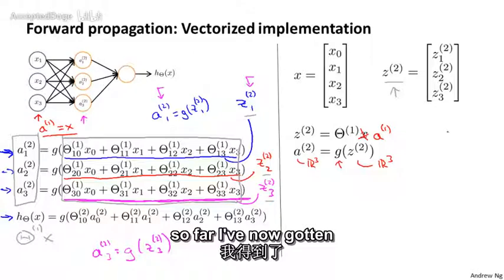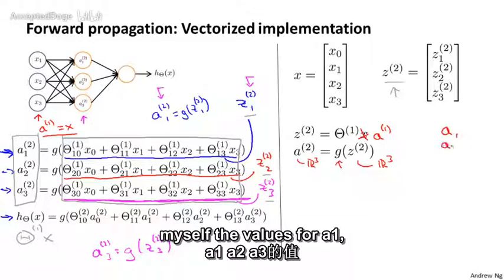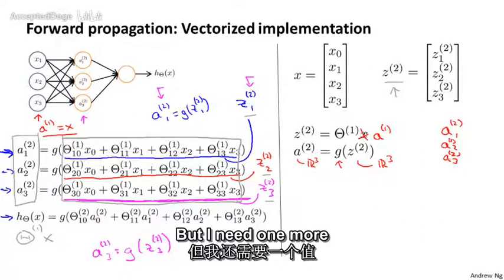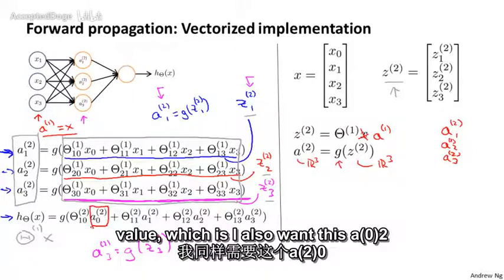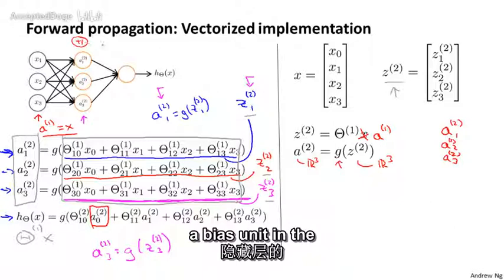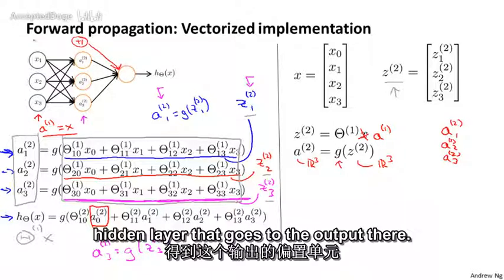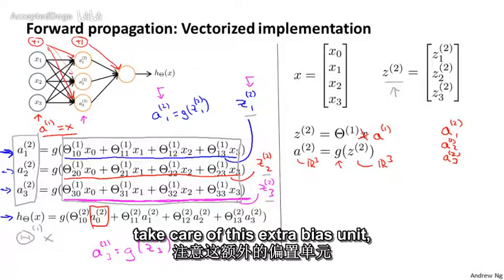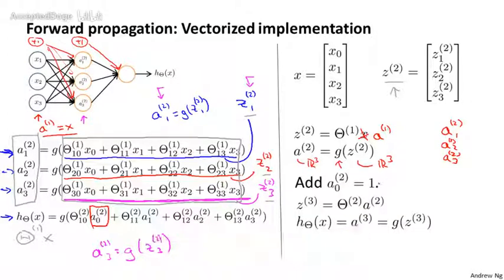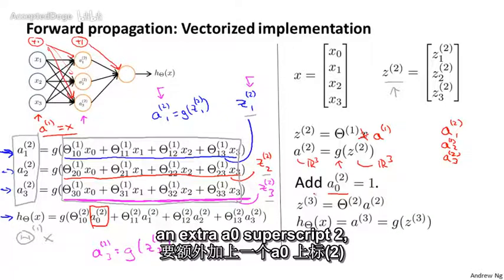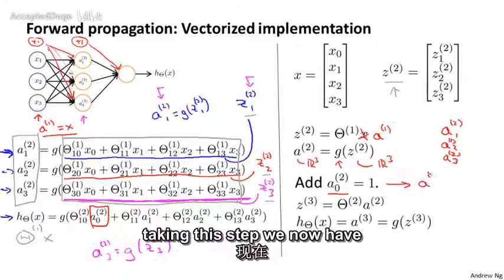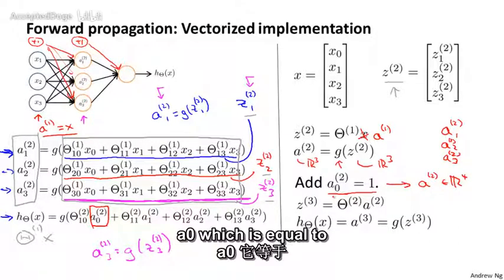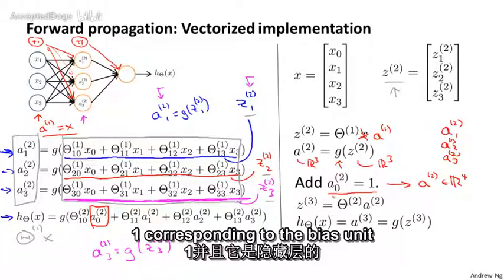With what I've written so far, I've now gotten the values for a1, a2, a3. But I need one more value: I also want a0 superscript 2, which corresponds to a bias unit in the hidden layer that goes to the upper layer. To take care of this extra bias unit, we're going to add an extra a0 superscript 2 that's equal to 1. After taking this step, a2 is going to be a 4-dimensional feature vector, since we added this a0 equal to 1 corresponding to the bias unit in the hidden layer.